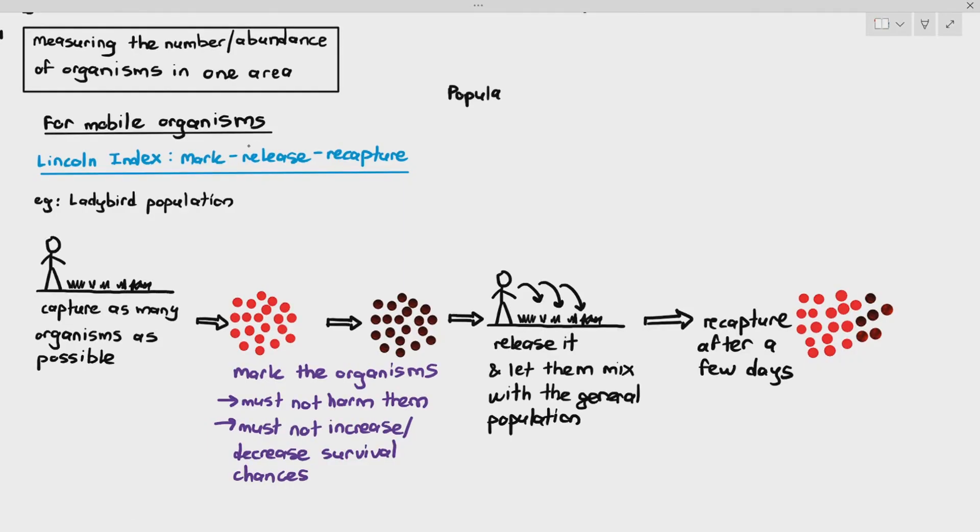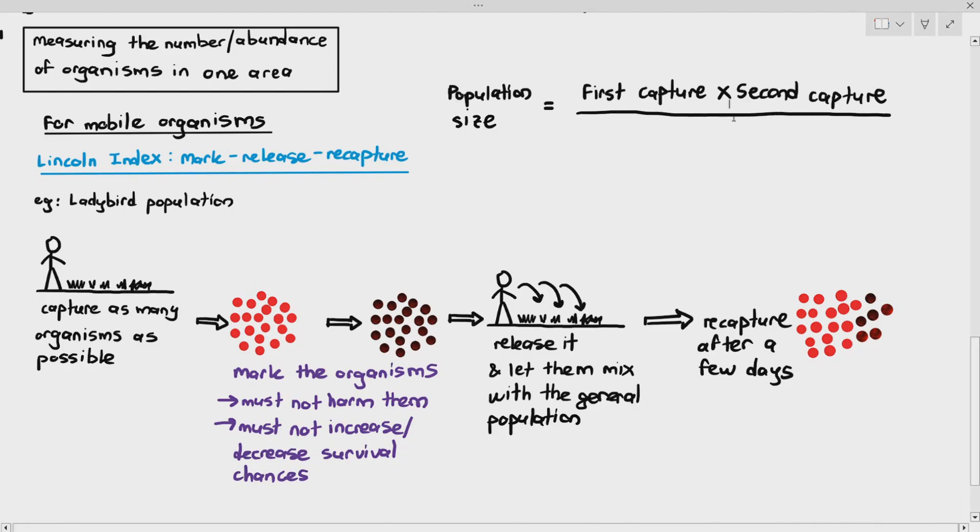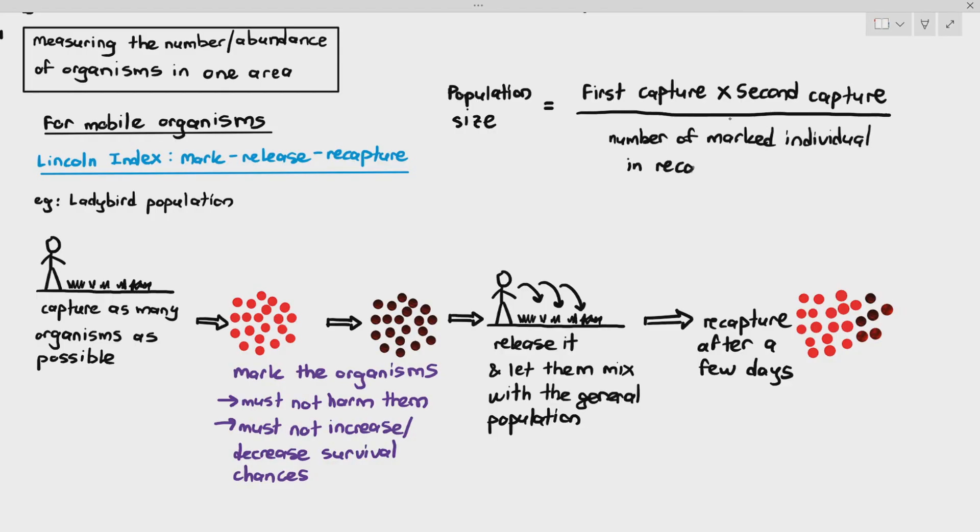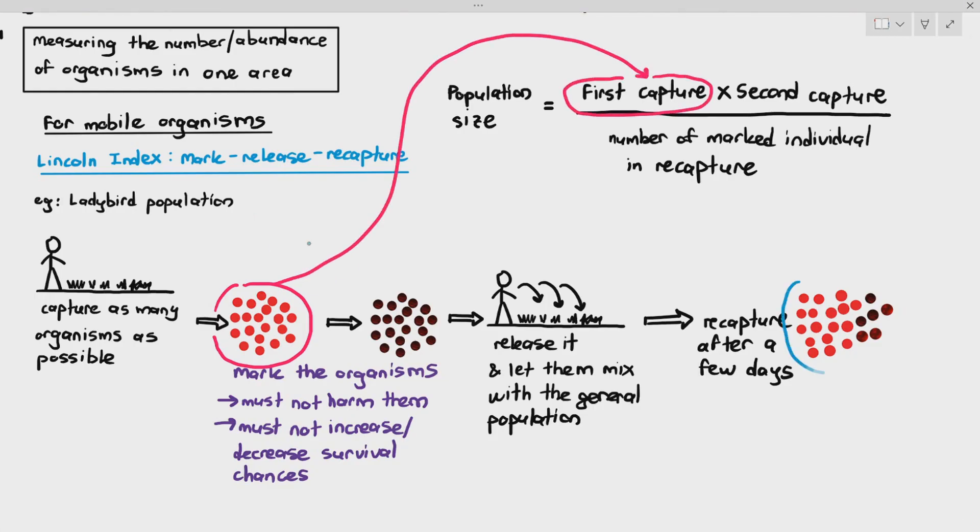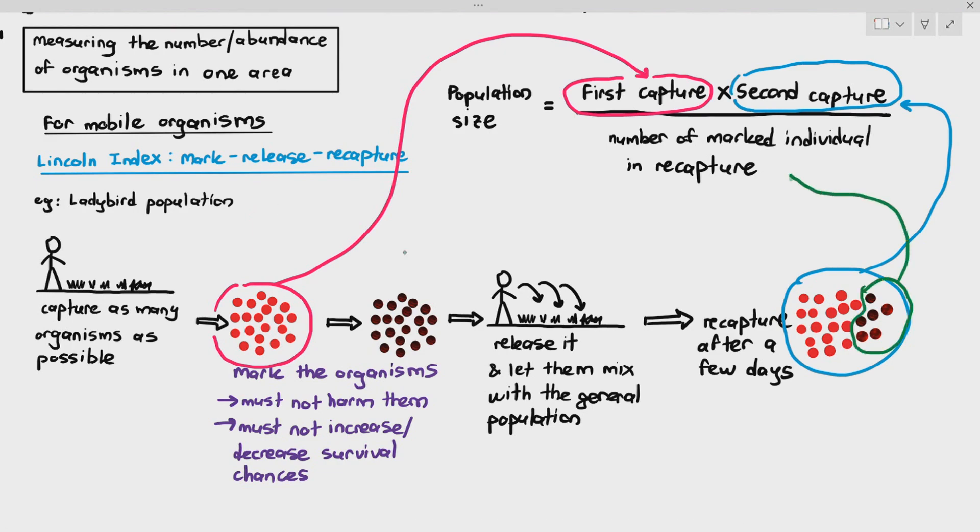By having this data, you can estimate the population size of the ladybirds in the field or the organisms in the population. The formula is as follows: the first capture multiplied by the second capture divided by the number of marked individuals in the recapture. So the first capture is that one right there. The second capture is that one right there, the whole thing. And divided by number of marked individuals is that value right there.